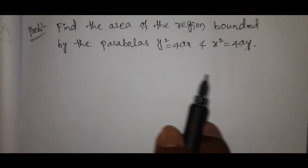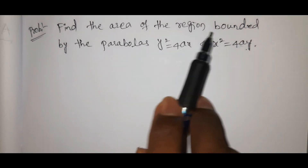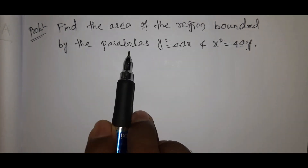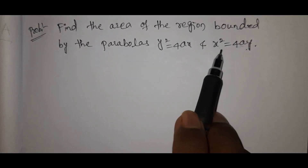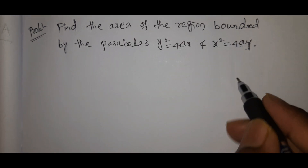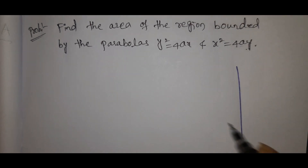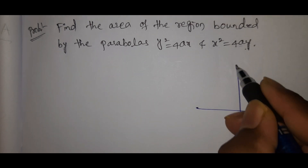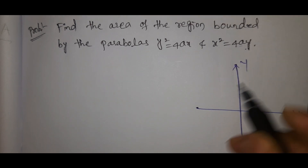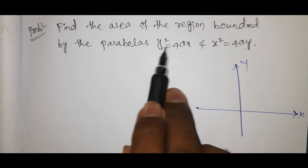First question: find the area of the region bounded by the parabolas y²=4ax and x²=4ay. These two parabolas are drawn with the x-axis and y-axis shown.